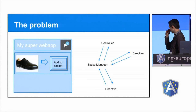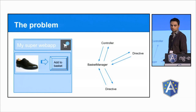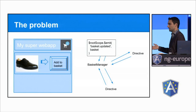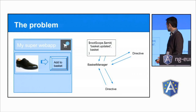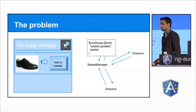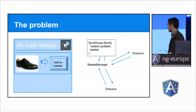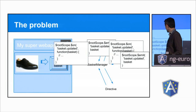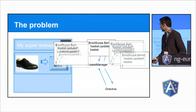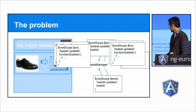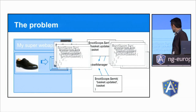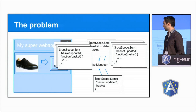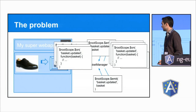I'm going to show you that in this example. We have a controller, a directive, and another directive, and they're all talking to the same basket manager. The controller does something to the basket, gets a new version of that basket, and then it has to tell all the other parts of the code that the basket is updated so that they can do their logic with it. So you have some events and listeners. Then another directive does another operation on the basket — the same sequence again — and another directive does something on the basket as well. I don't really like that.